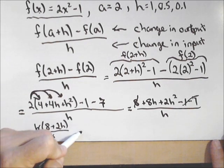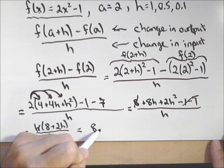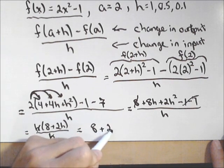So, let's move this up. So, I've got h times 8 plus 2h all over h. And those h's cancel. And I get all the way down to 8 plus 2h.